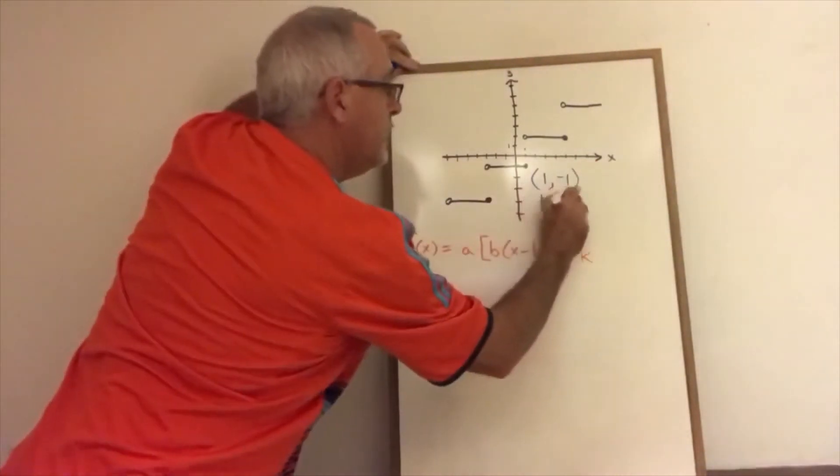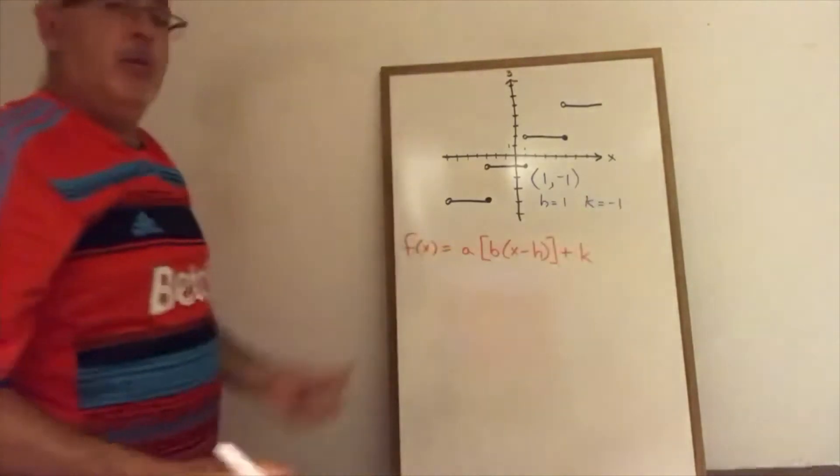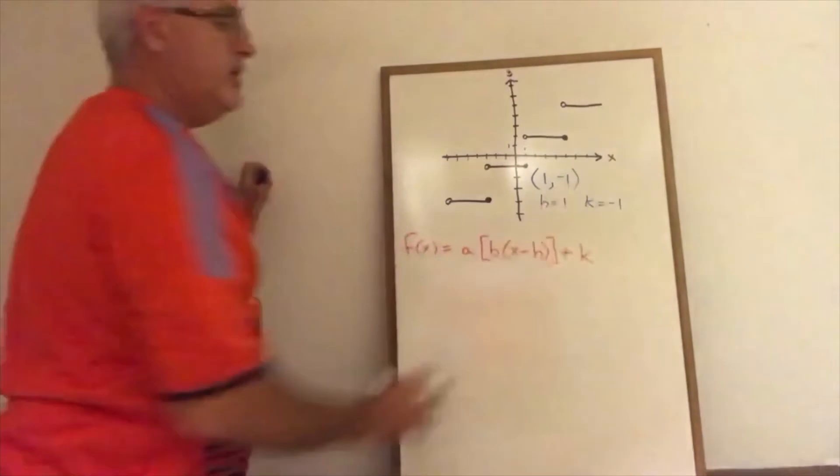So h equals 1, k equals negative 1. We're halfway there. We have four parameters and we've found two of them.